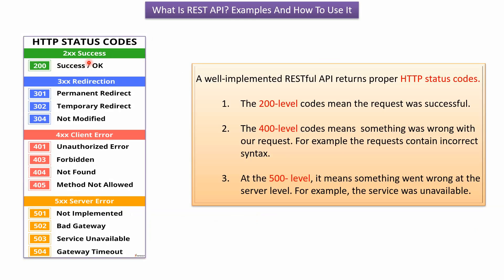A well-implemented RESTful API returns proper HTTP status codes. A 200-level code means the request was successful. A 400-level code means something was wrong with the request — for example, the request contains incorrect syntax. And a 500-level code means something went wrong on the server side — for example, the service was unavailable.